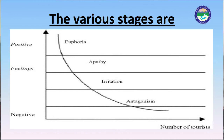The second stage is apathy. The destination continues to develop with the passage of time. Tourists no longer seem new to the host community and locals get used to them. Locals don't get too bothered by the tourists and see tourists only as a source of money; they are not interested in communicating with them. The third stage is annoyance or irritation. The destination has reached saturation point. Development of tourist attractions and tourist-related services can be seen everywhere, leading to over-development. This annoys the locals, who are irritated with the tourists visiting their destination, leading to a lack of resources for locals.